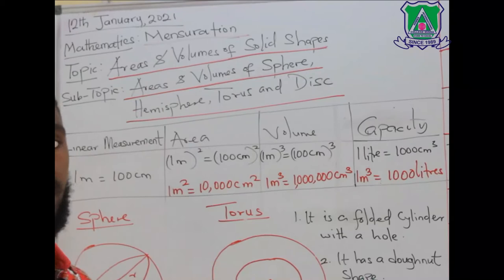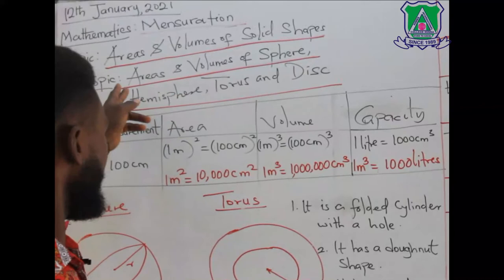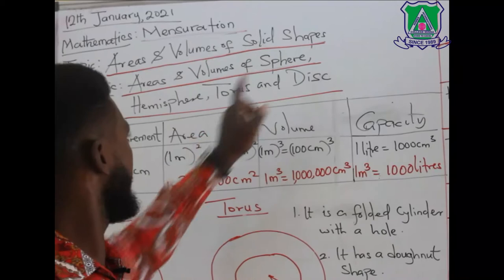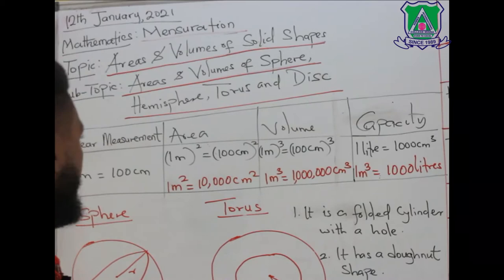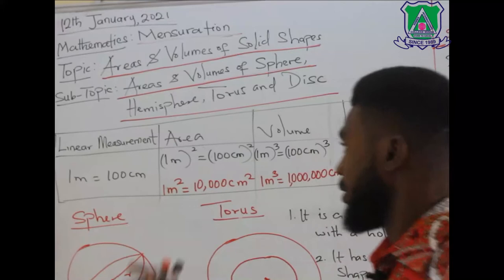Now, today we'll be looking at areas and volumes of solid shapes. That is the topic. Areas and volumes of sphere, hemisphere, torus, and disc. So now, this is the conversion table.